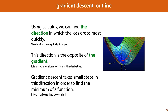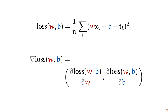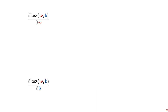To finish up this video, let's apply this method to our example problem. We have a loss surface, and all we need to do to search this loss surface is work out the partial derivatives of our loss function. Here's our loss function — the mean squared error loss — and here's the definition of the gradient: it's a vector consisting of the derivative of the loss with respect to w, and the derivative of the loss with respect to b.